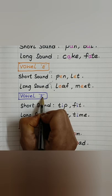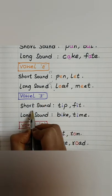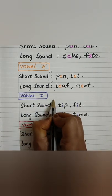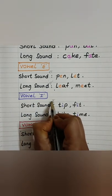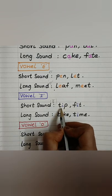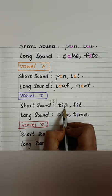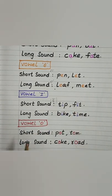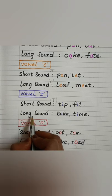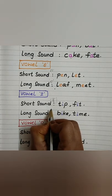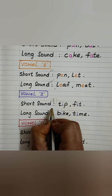Vowel I. The short sound of I is 'i' — T, I, P: Tip. F, I, T: Fit. The long sound of I is 'I' only.